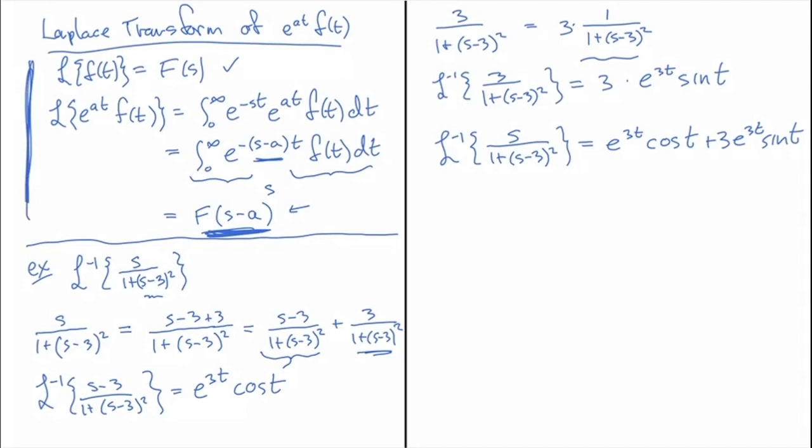And that is how we use this result over here, which tells us how to invert the shift of a known transform, which is exactly what we had in two separate instances once we broke this up into a more easily inverted form.